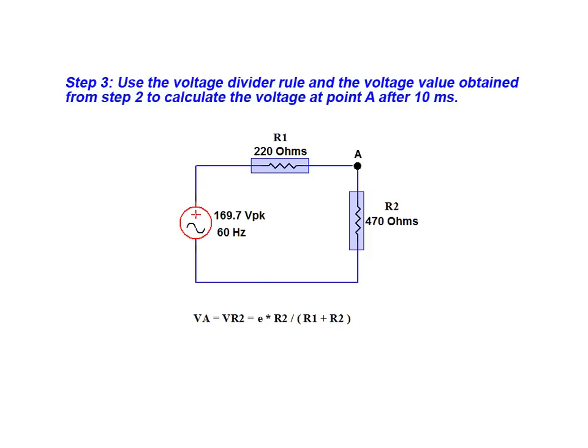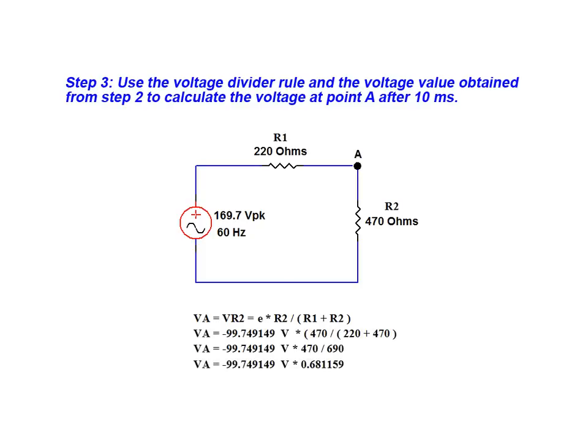Lastly, we use the voltage divider rule and the voltage value obtained from step 2 to calculate the instantaneous voltage at point A after 10 milliseconds. We use the instantaneous source voltage value along with the resistor values to arrive at a final voltage of minus 67.945 volts.